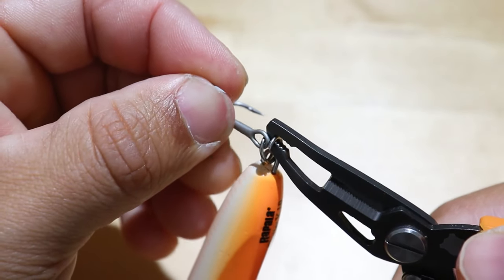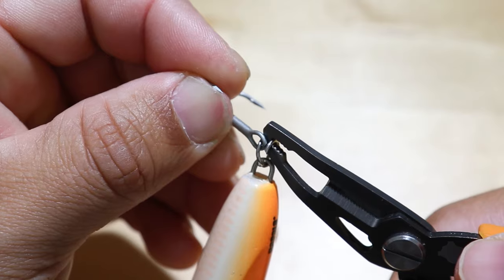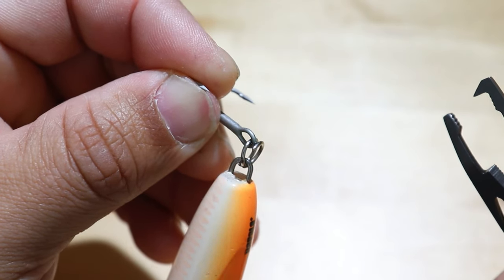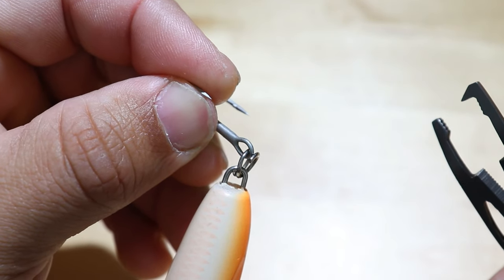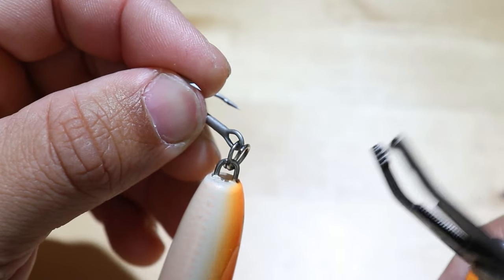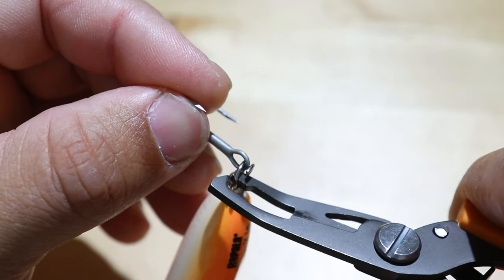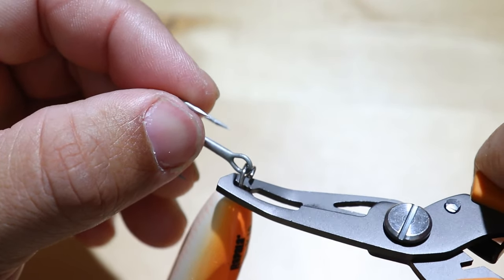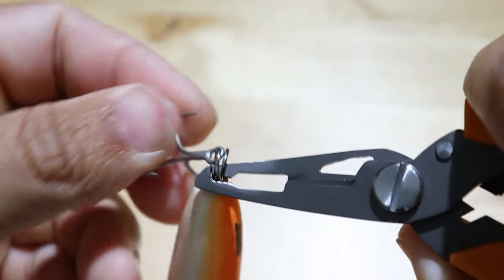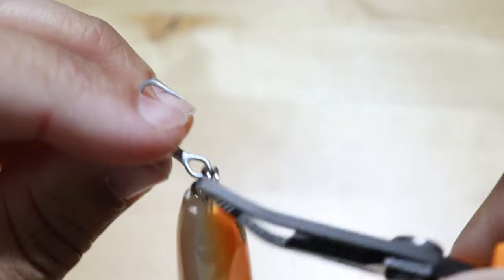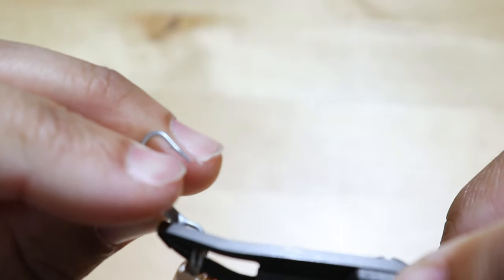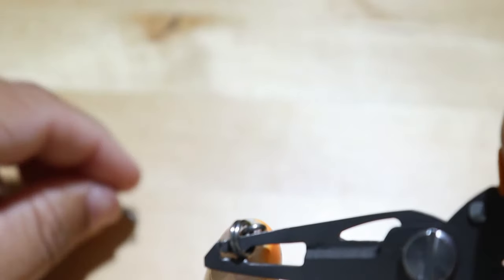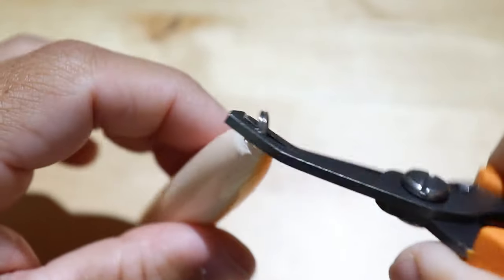You can see here got the hook started, it's in the gap and then I'll just take my split ring pliers off and it's already started going through that gap. Then from there you can use your hands but I just like to use the pliers to hold on to the split ring and turn the split ring as I push the hook in the opposite direction and that will get that hook off of the split ring like that.